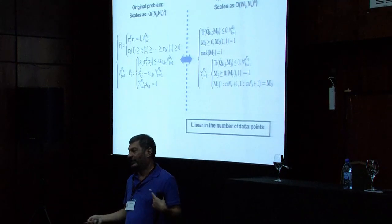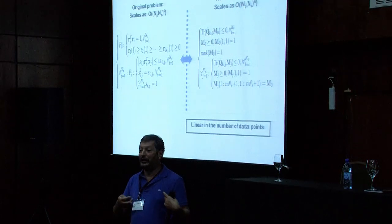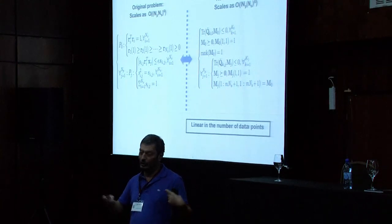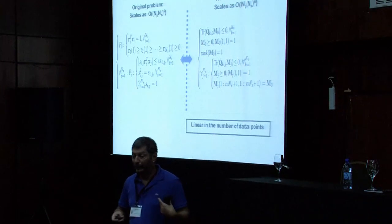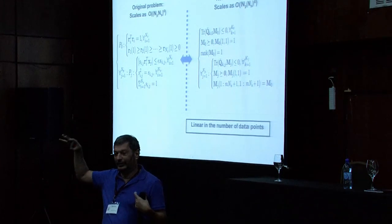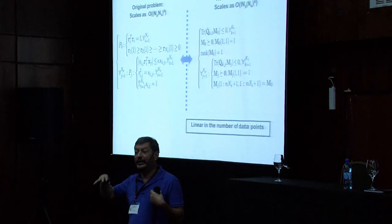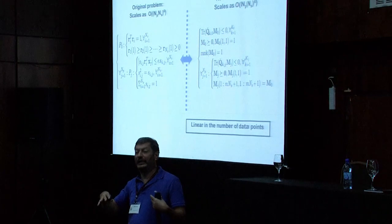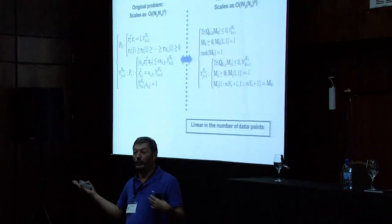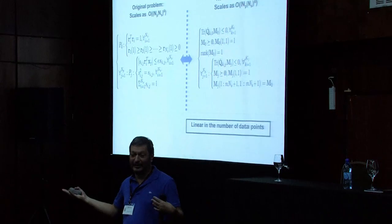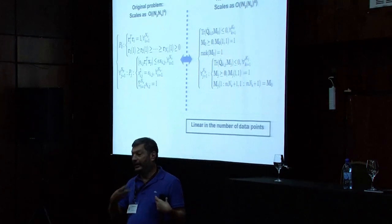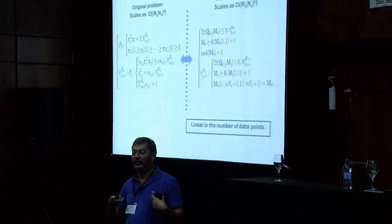If you do things right, you can get an algorithm that scales linearly instead of polynomially with the number of data points. If you use sparsity, you get something that's linear in the number of points — it's still horrible scaling with the dimension of your space, but we know the problem is NP-hard, so this algorithm actually has the correct scaling. We end up solving a convex problem, but a smart convex problem rather than just getting this huge SDP and throwing it at your favorite SDP solver.